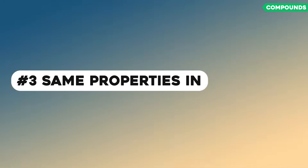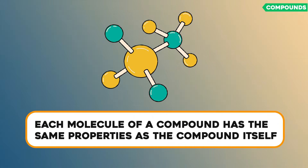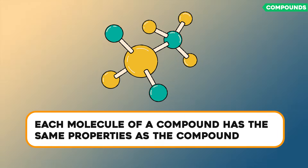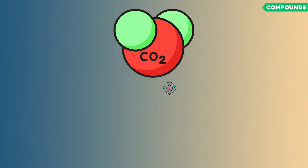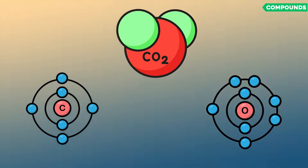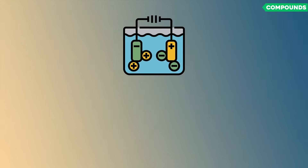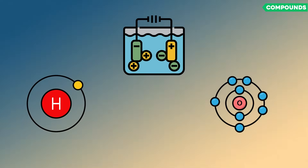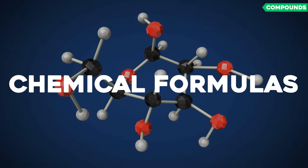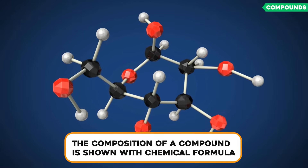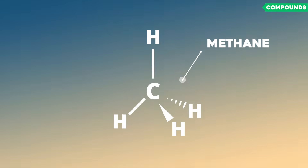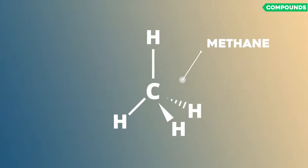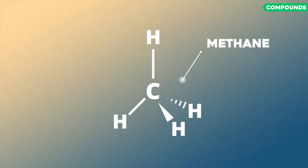Third, same properties in molecules: each molecule of a compound has the same properties as the compound itself — every drop of water behaves the same. Fourth, can be broken down: compounds can be separated into their individual elements, but only through chemical methods, like how water can be split into hydrogen and oxygen with electricity. The composition of a compound is shown using a chemical formula. For example, CH4 is the chemical formula for methane, showing one carbon atom and four hydrogen atoms.